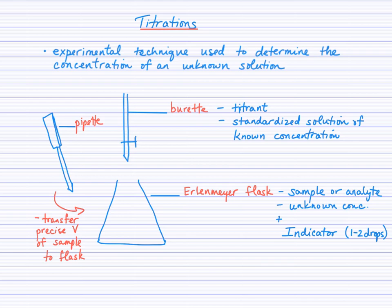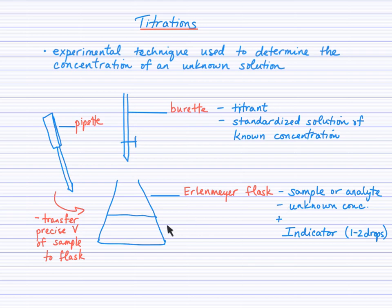We're going to use titrations in the context of acid-base chemistry. There's some key glassware: you'll be familiar with the pipette, which is used to transfer precise volumes of the sample to the Erlenmeyer flask. The flask will be prepared with the sample — also referred to as the analyte — plus a couple of drops of indicator. Whichever solution we do not know the concentration of goes in the flask. Into the burette goes the solution we do know the concentration of — a standard solution — called the titrant.